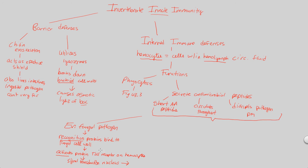Once that signal transduction message has been received, the nucleus tells the hemocyte to produce antimicrobial peptides — exactly what we'd expect. The final step is that this process produces antimicrobial peptides to kill whatever fungi may have entered. The stepwise arrangement is: recognize the fungal cell wall, activate the Toll receptor on hemocytes via signal transduction to the nucleus, and the nucleus directs the hemocyte to produce antimicrobial peptides.